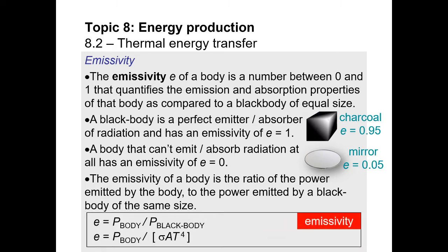At the bottom of the screen you'll see two formulas for emissivity. The value has to be between 0 and 1, which means the denominator has to be bigger. The denominator here is P black body — the power emitted by a black body. At any point in time, the power actually emitted by a body should be either equal to, or less than, that of the black body. The power of a black body we can replace with sigma AT to the 4 — the Stefan-Boltzmann law. We're going to amend that a little bit later on.